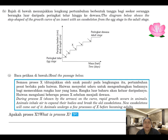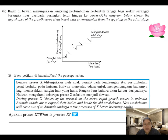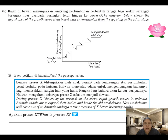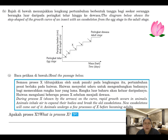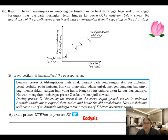Part b shows the growth curve of an animal with an exoskeleton, from the egg stage to adult. During process X, the diagram shows rapid growth occurring. The animal inhales air to expand its body and break the old exoskeleton, then a new exoskeleton forms. The animal undergoes several rounds of this process before becoming an adult. The whole process X is called ecdysis.